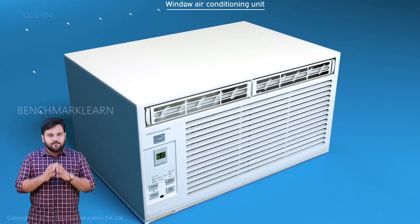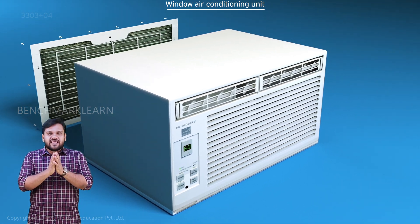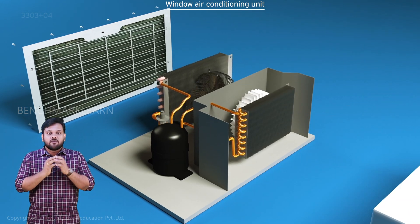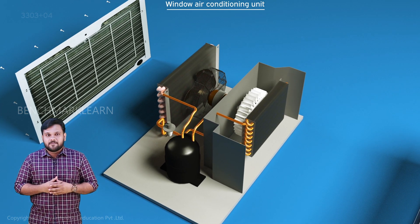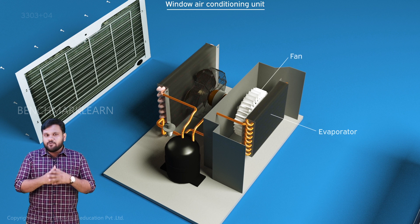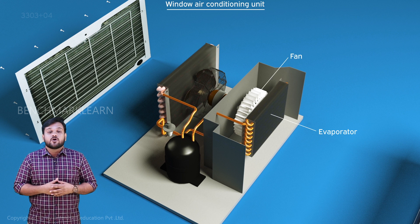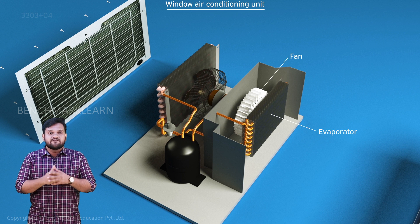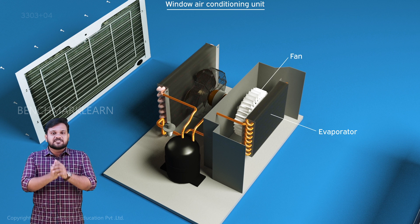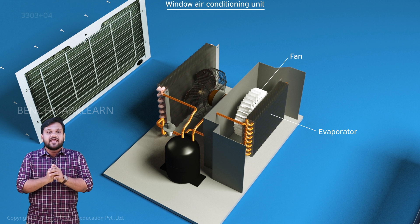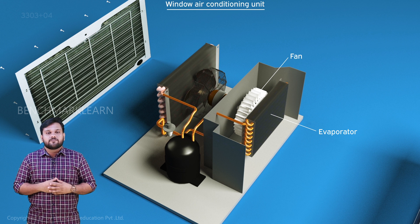The part which is exposed to our room contains the evaporator and a fan. The evaporator absorbs heat from the room and the fan redistributes the chilled air into the room.